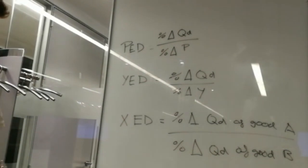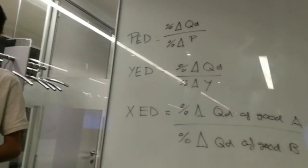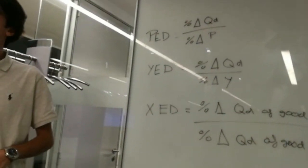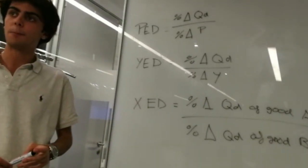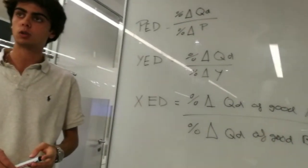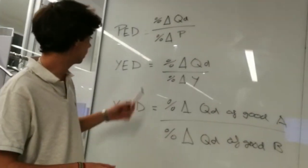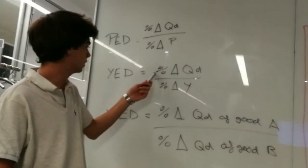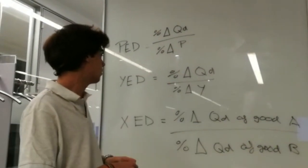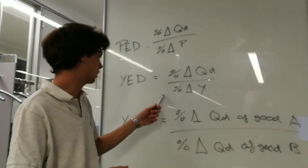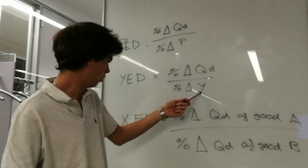The income elasticity of demand measures the sensitivity of demand to a change in income. The formula used to define it is the percentage of the variation of the quantity demanded divided by the percentage of the variation of the income.